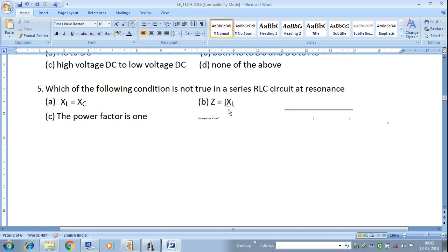This is correct and this is also correct. But this is not correct: Z is equal to jXL. This is not correct. Therefore, answer is B.